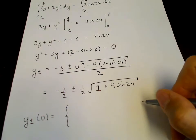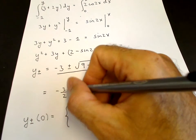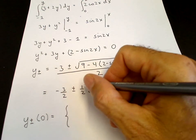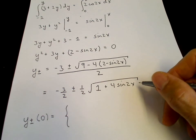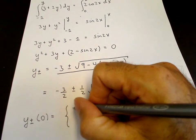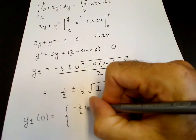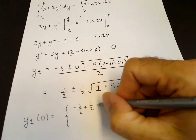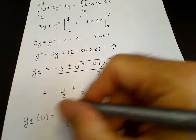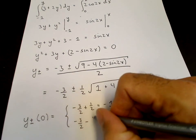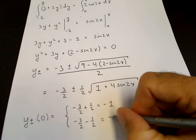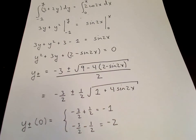y plus or minus of 0, writing the plus 1 on top, is minus 3 halves plus 1 half times square root of 1. Sin0 is 0, so minus 3 halves plus 1 half is minus 1. The minus root is minus 3 halves minus 1 half is minus 2.